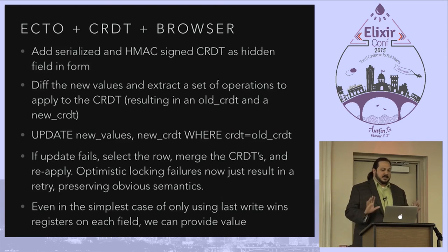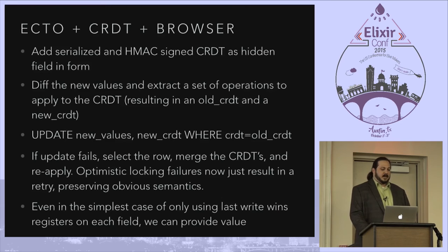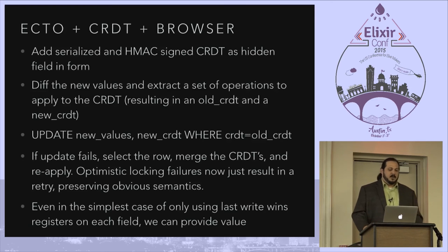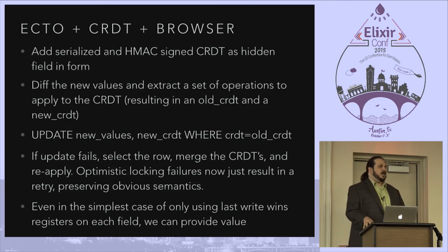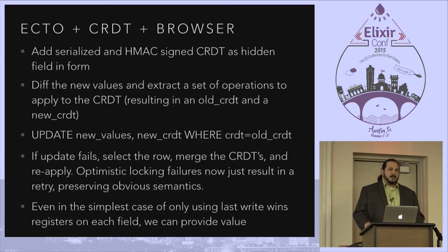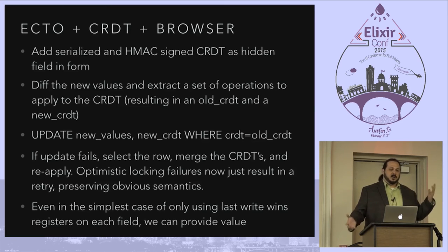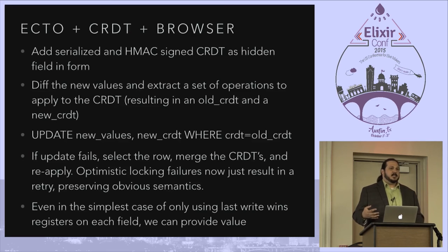We find the differences, extract operations, and apply them back on the CRDT. The optimistic lock update fails to insert if a constraint is violated — meaning you can't insert new values if someone else changed it between your old CRDT and the current one. But you can select the conflicting row, merge the CRDTs, and reapply. Imagine the lazy case: you add last-write-wins to every single field. With a very large form where one person edits two or three fields and another edits three or four, the last-write-wins context will preserve both sets of writes because the things that didn't change won't conflict.